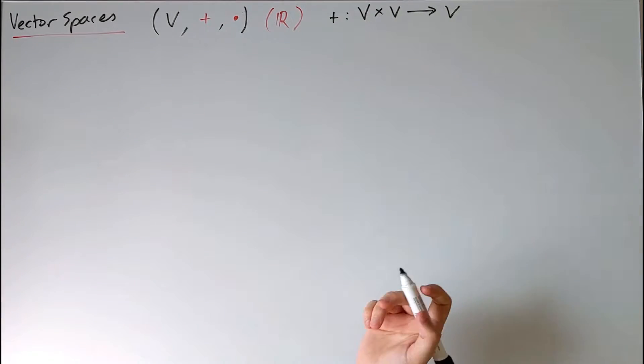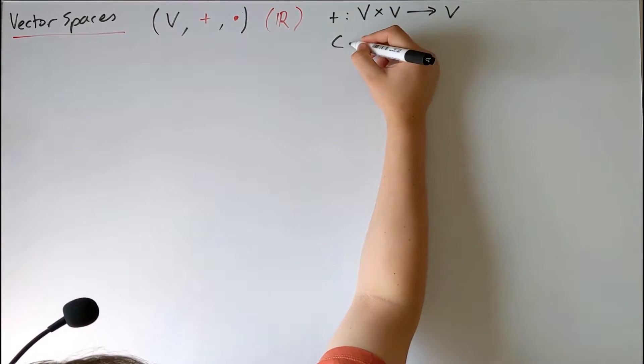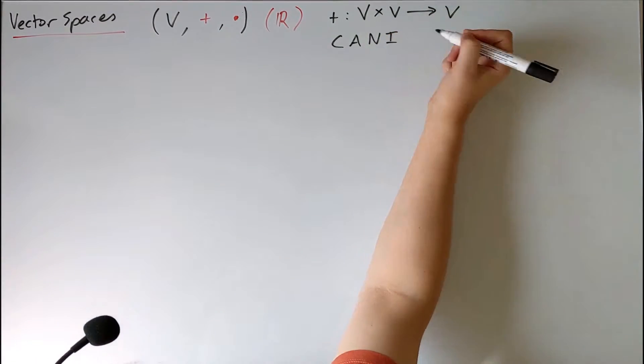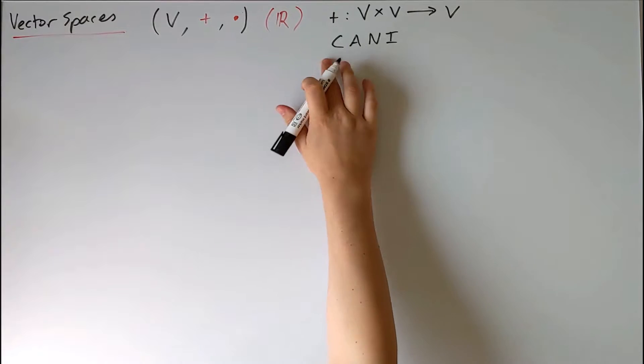And this map has to satisfy a certain list of rules, the vector space axioms. So for vector addition, these were commutativity, associativity, the existence of a neutral element, and the existence of the inverse, which I'll frequently refer to as CANI.